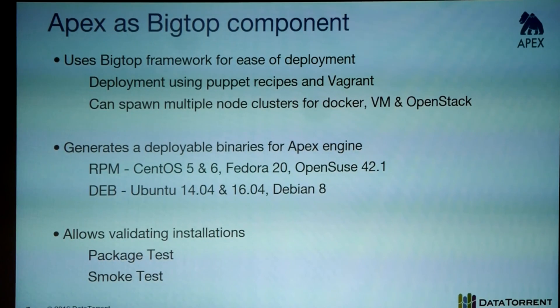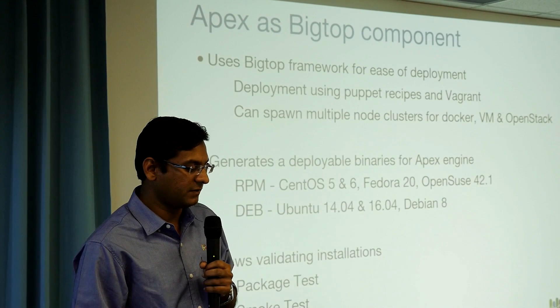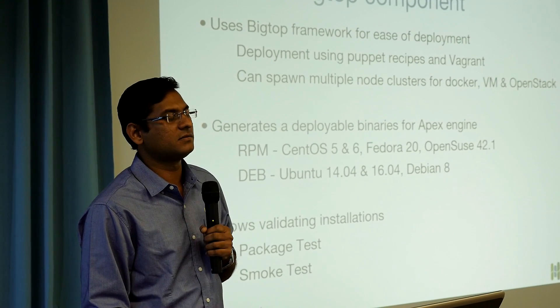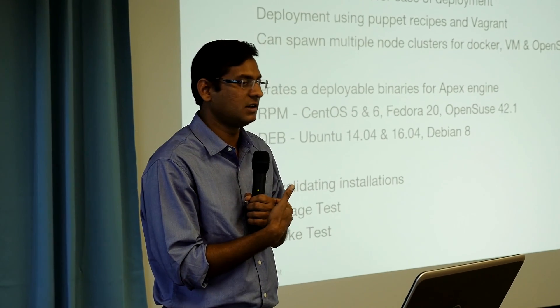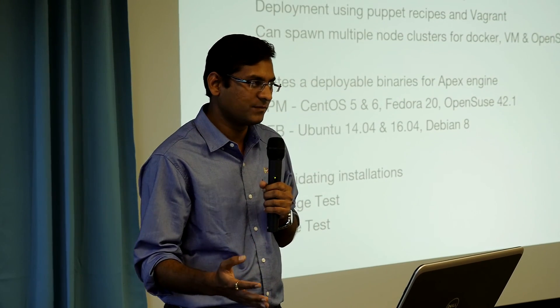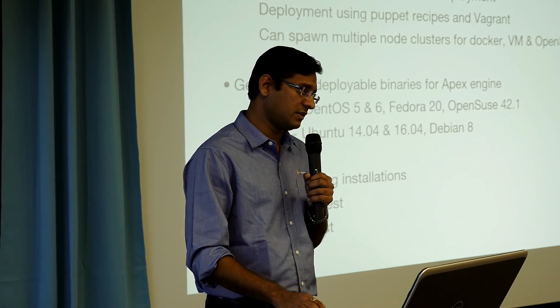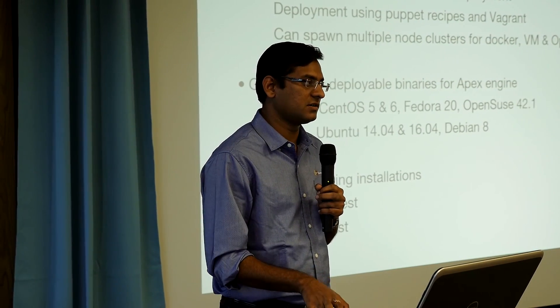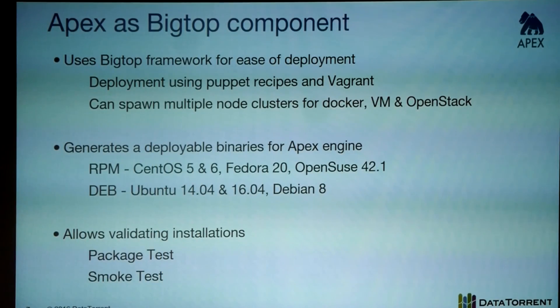Being a Java application, Apex also gets RPM and Debian packages created for it via BigTop. This covers CentOS, Fedora, OpenSUSE, Ubuntu, and Debian — the list from the CI web page. All these packages for all these operating systems are being created for Apex. Another important factor is validation of the installation. Apex supports two tests: first, a package test that verifies the package is correctly installed at the package level. Second, and more importantly, a smoke test that actually runs an Apex application on the deployed cluster to validate that everything is working correctly. That's a very important aspect when it comes to distributed systems.